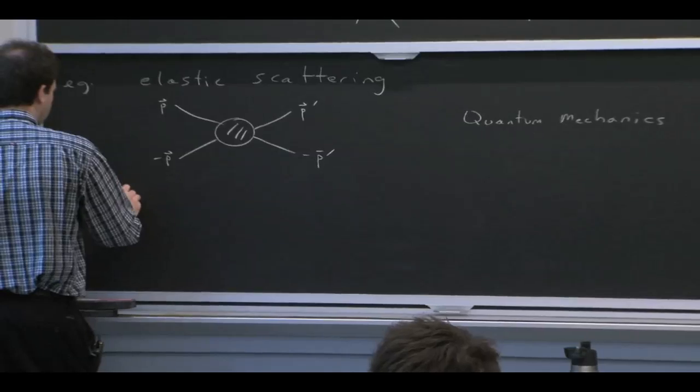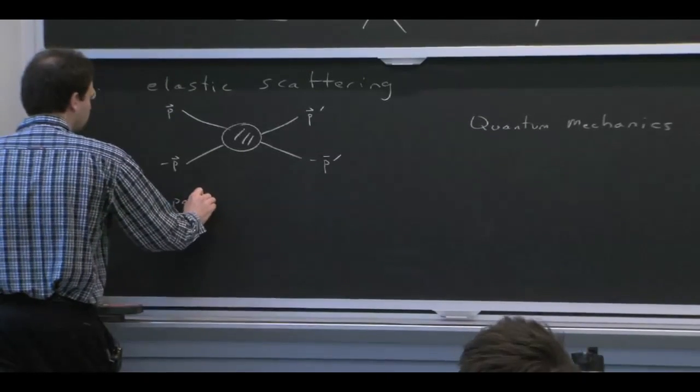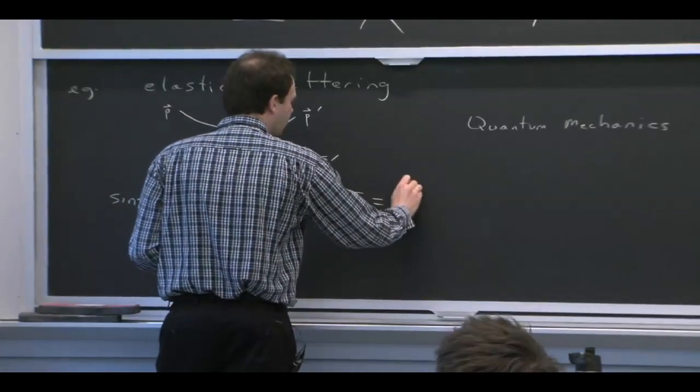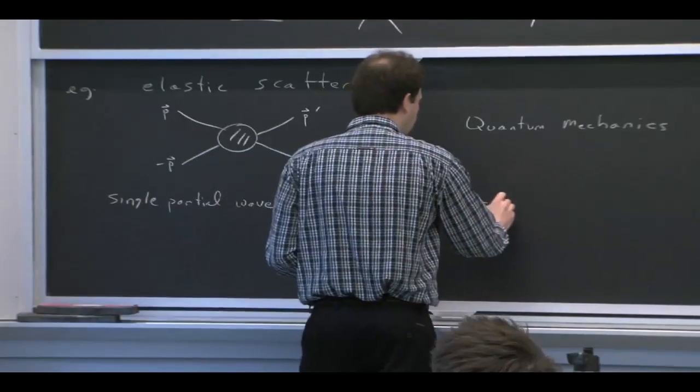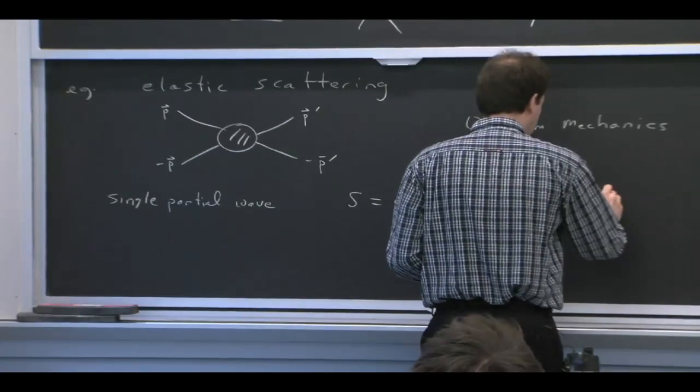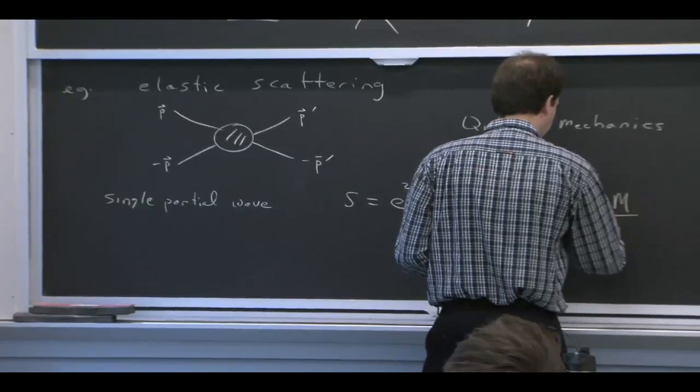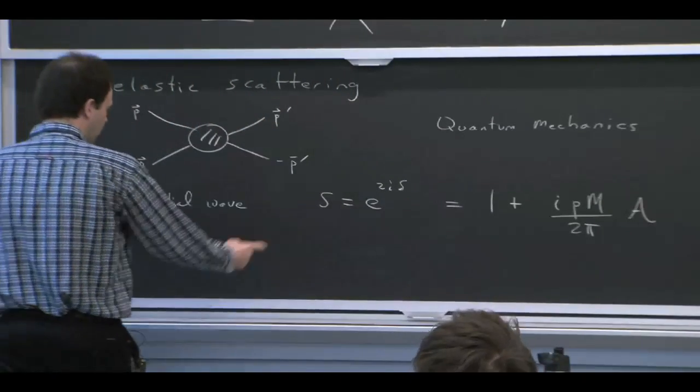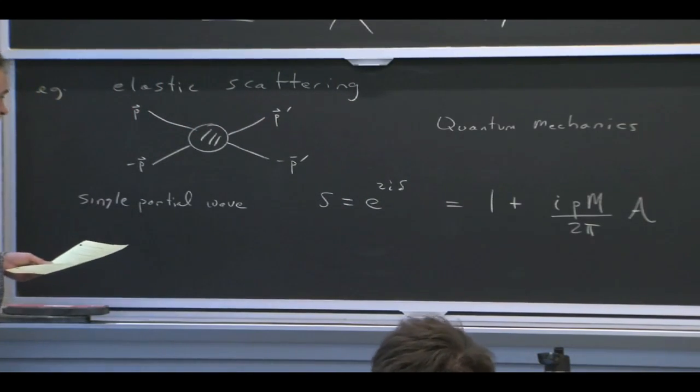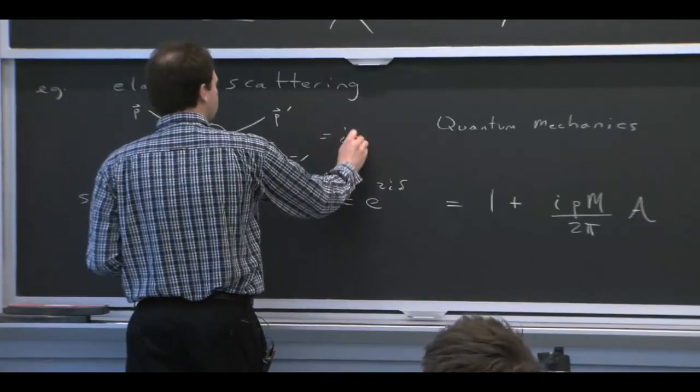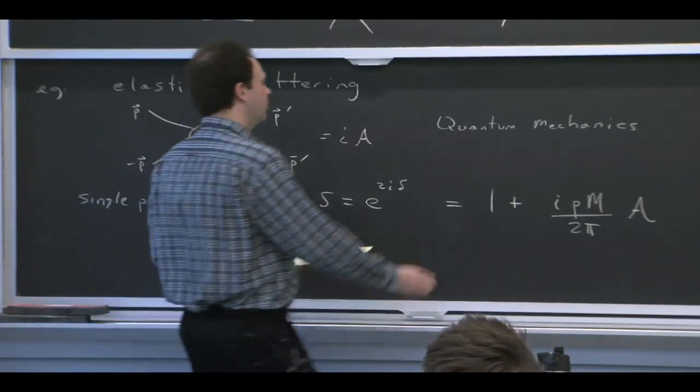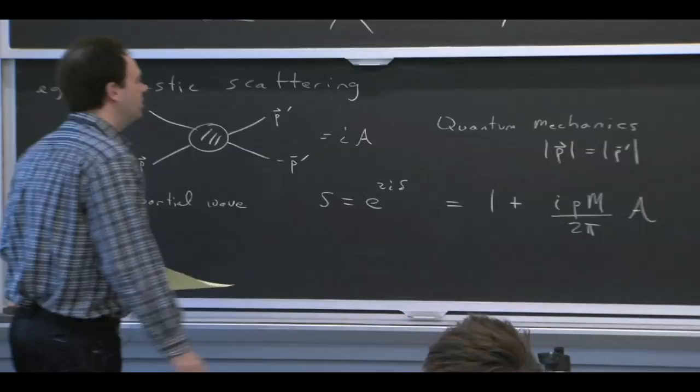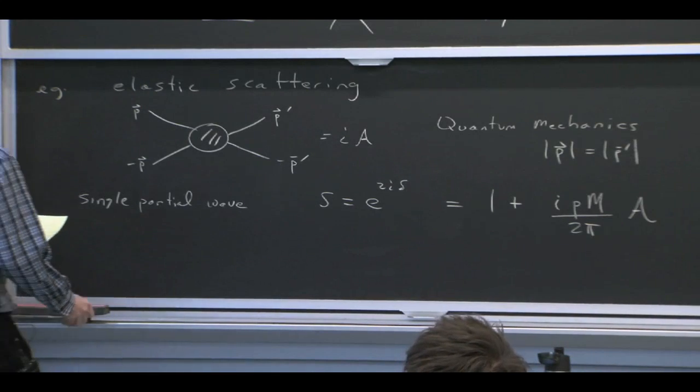It's like non-relativistic scattering. So if you have a single partial wave, then this scattering is described by a phase shift, delta. And the relation of the phase shift to the amplitude with our normalization for the amplitude is this. So this is the S matrix. It's just a phase. And that's the relation of the S matrix to the amplitude. And this thing is the amplitude.